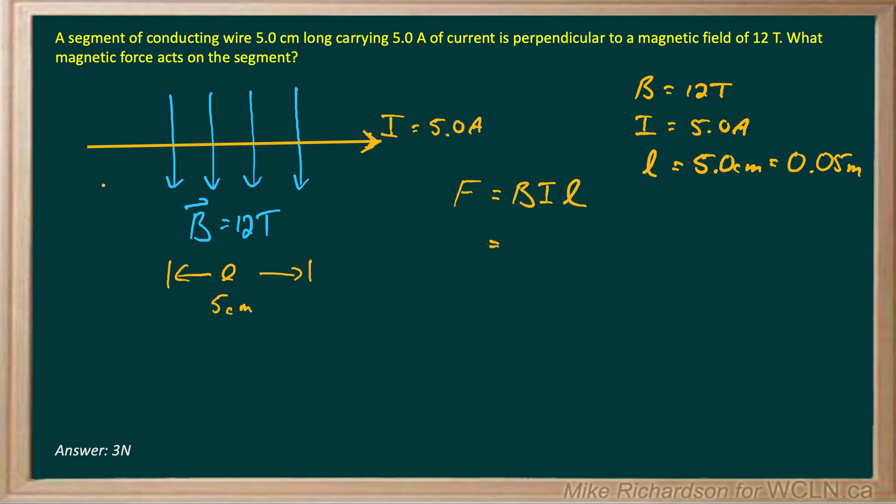Sometimes on tests and quizzes they'll give you the entire length of the wire. They'll give you all these crazy dimensions. So imagine they give you the entire length of the wire is 10 centimeters and then they give you this length as well. The length that goes in the equation is the length of the wire that's actually in the magnetic field.